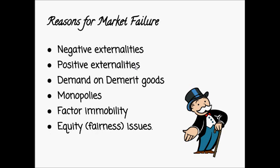The second reason is negative externalities, where the social cost of production exceeds the private cost. The third reason is that demerit goods are over-produced or over-consumed, whilst merit goods are not used enough. A demerit good is something that isn't good for you or society, such as alcohol or cigarettes.